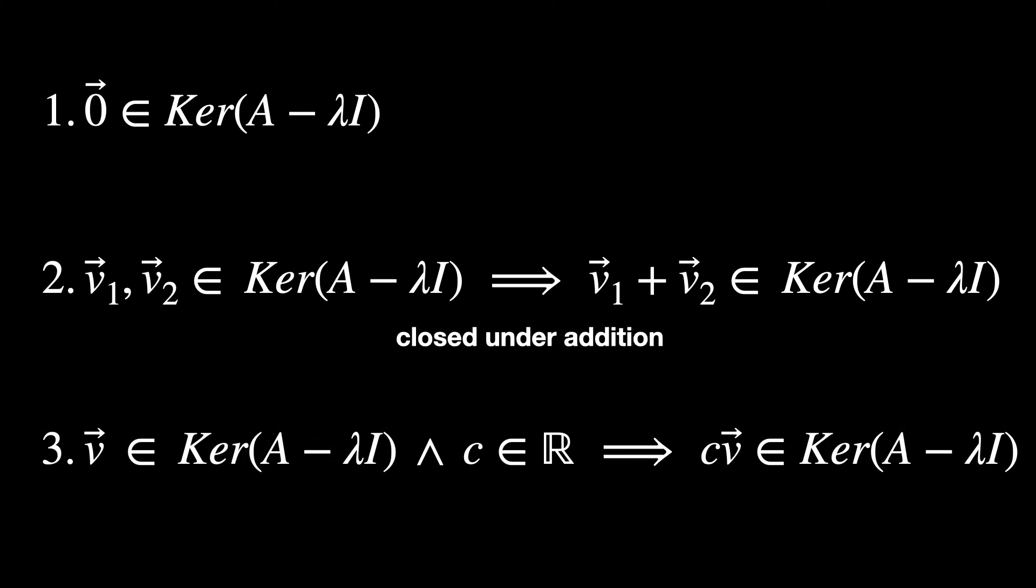And the third property is that if you choose any random vector in the kernel and a scalar, and you multiply the scalar C times this vector V, you still get a vector inside of the kernel. In other words, it is closed under scalar multiplication.